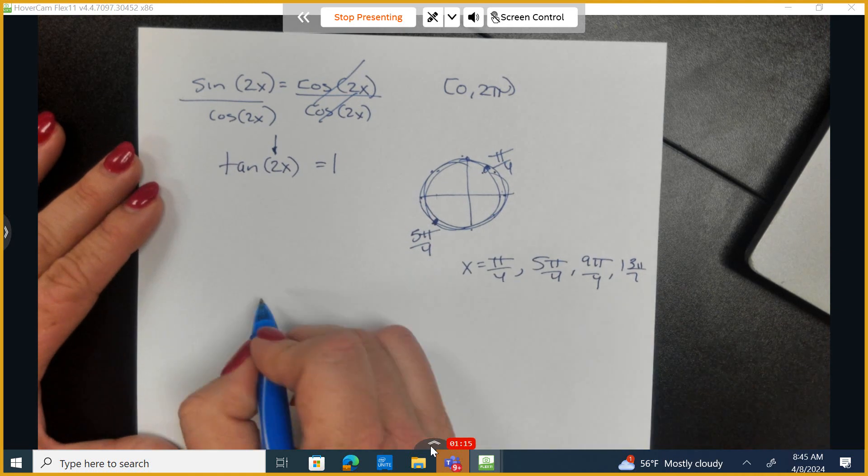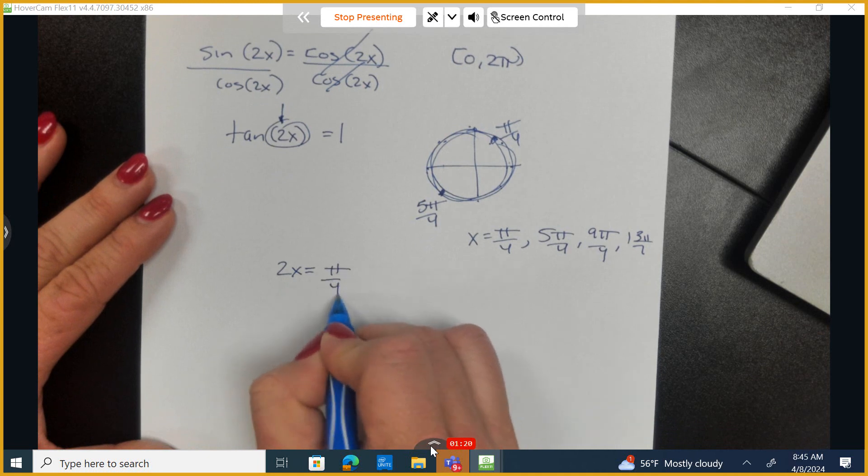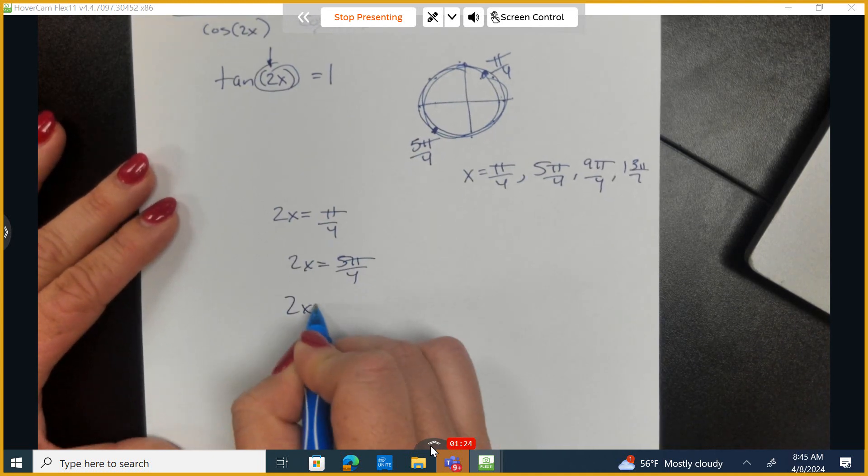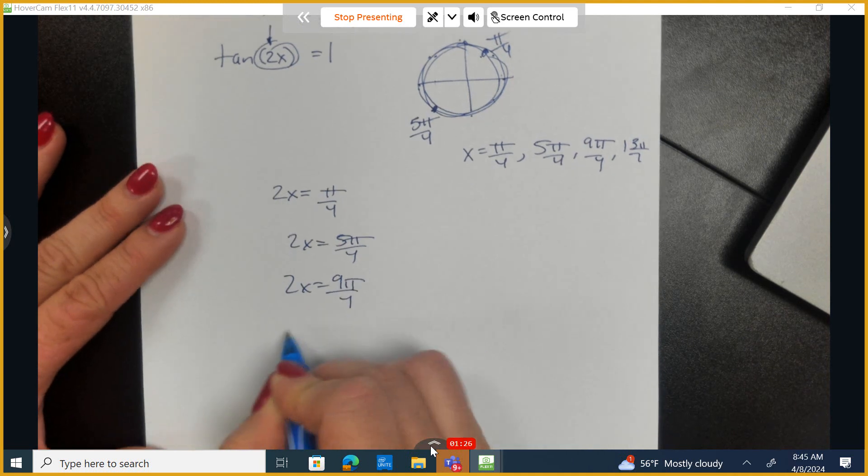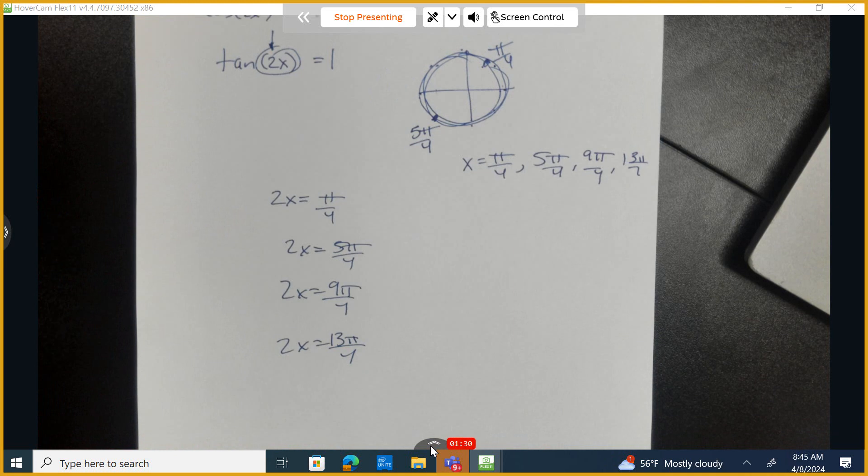So that's right. So this is what I have, and I'm going to take each one of those: 2x equals pi over 4, 2x equals 5 pi over 4, 2x equals 9 pi over 4, 2x equals 13 pi over 4. And now we need to solve for x.